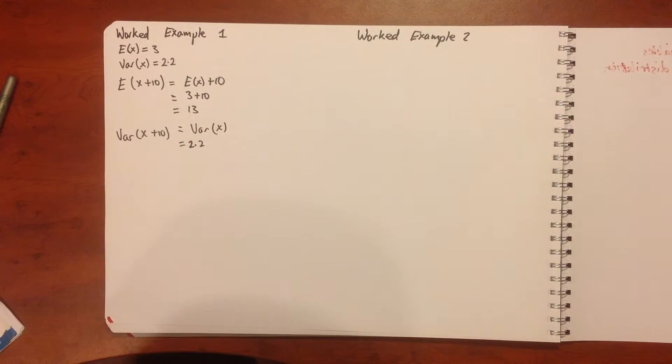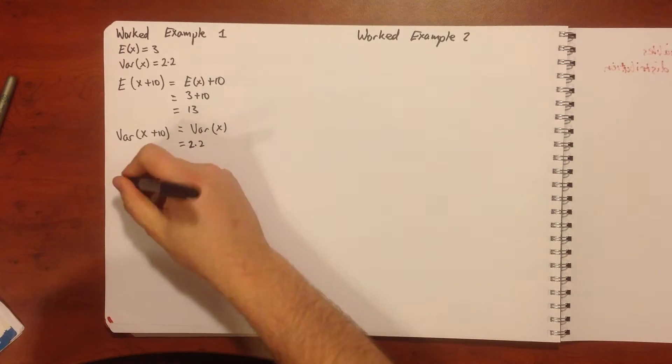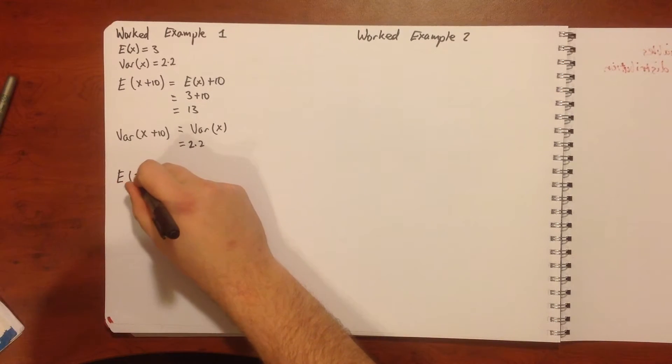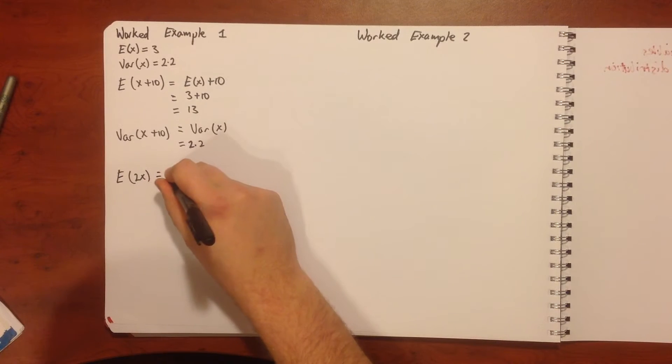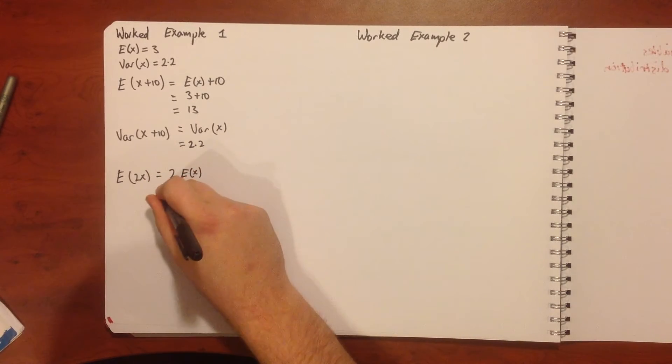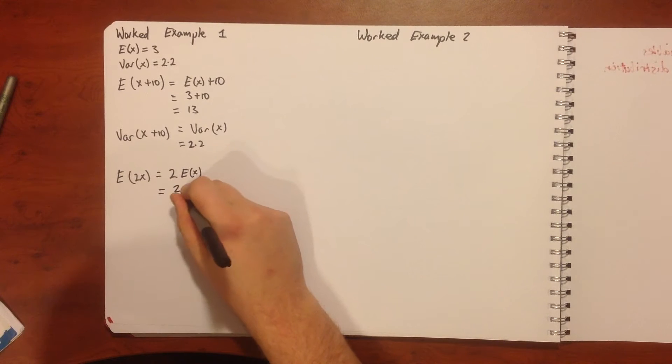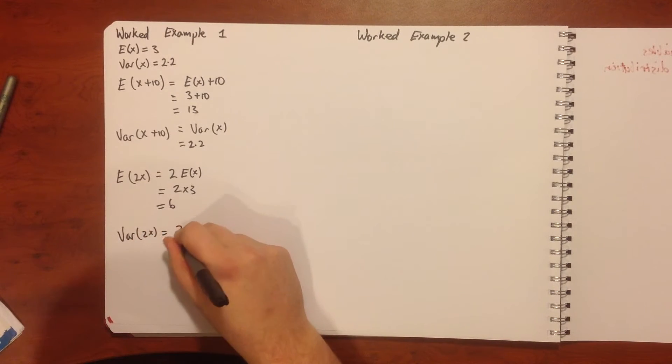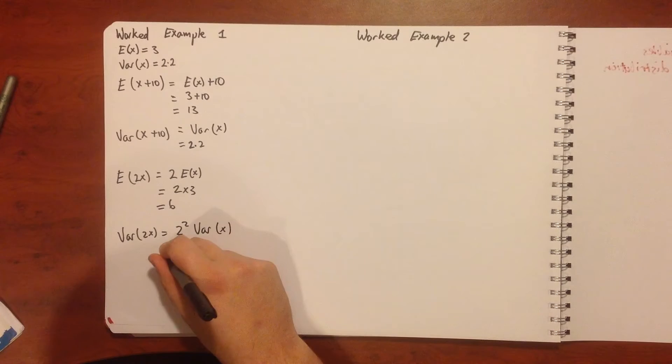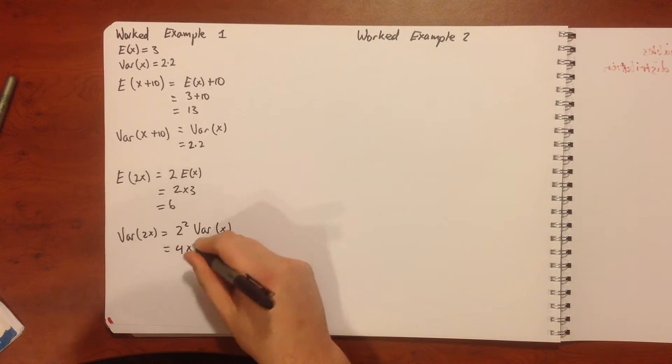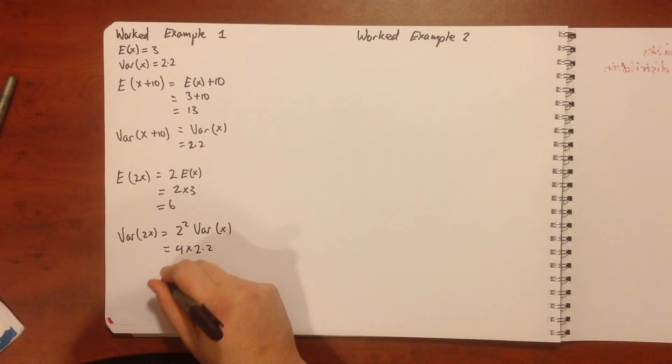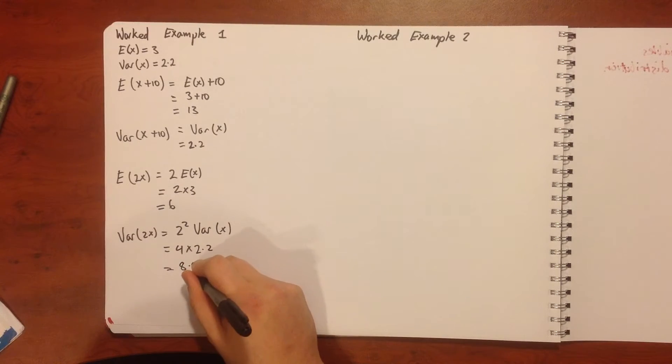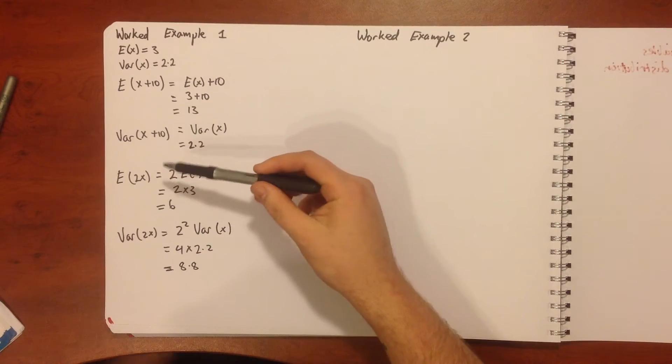Part two, if each score in the distribution is doubled, what's the new expected value and variance? E of 2x is equal to 2 E of x, so that means we get 2 times 3 which is 6. Our variance of 2x is equal to 2 squared times the variance of x, which equals 4 times our variance which is 2.2, which gives our variance a value of 8.8.